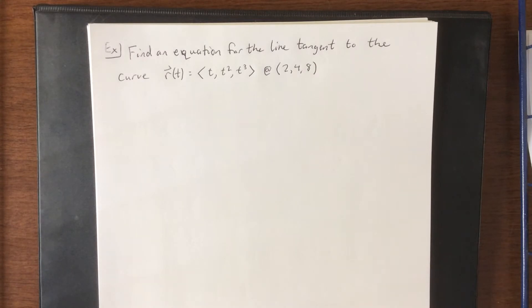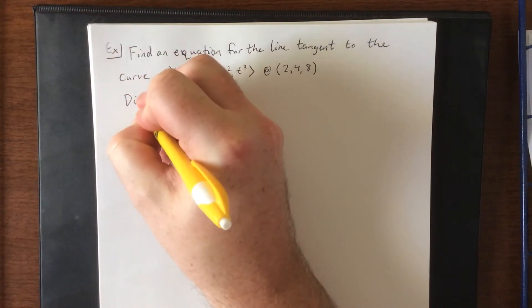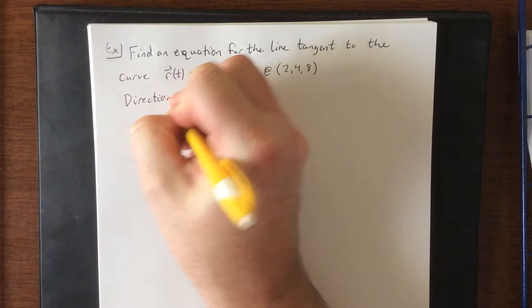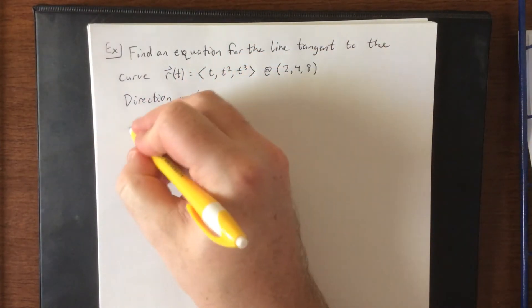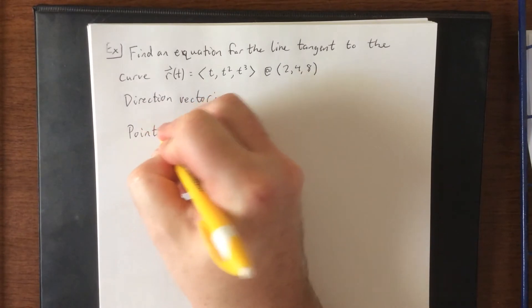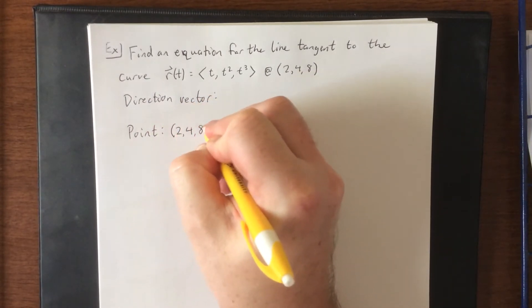Now with that in mind, in order for us to find the equation of any line, we always need the same two things. We'll need a direction vector and we'll need a point. The direction vector we don't yet have, but we do have a point, and the point that we have is (2, 4, 8).